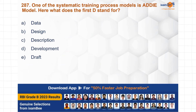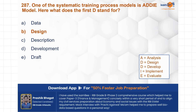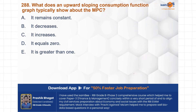One of the systematic training process models is the ADDIE model. What does the first D stand for — data, design, description, development, or draft? B — Design — is the correct choice. A stands for Analysis, D for Design, the second D for Develop, I for Implement, and E for Evaluate.